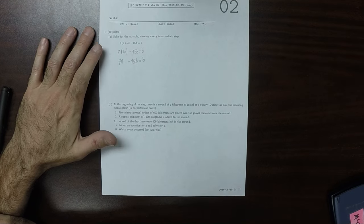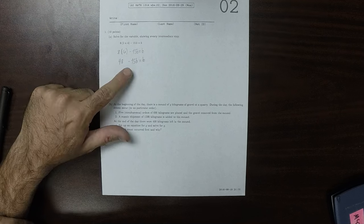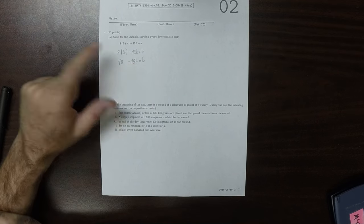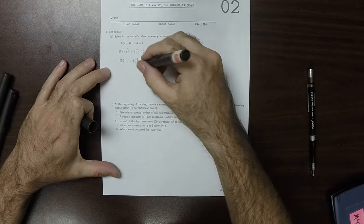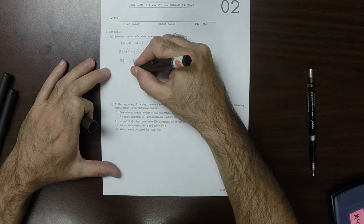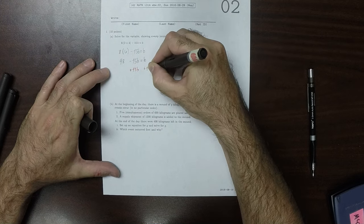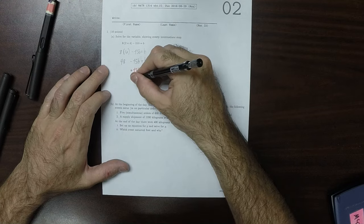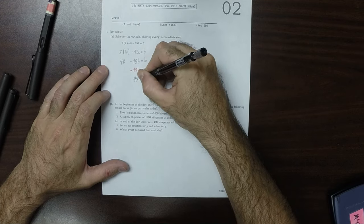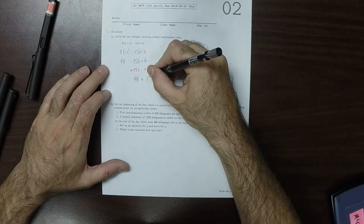We want to solve for the variable, so we need to collect the Bs together now. To collect the Bs together, we can add 15B to both sides. There's no other operations to occur besides this. Add 15B to both sides. So 48 equals 15B plus 1B is 16B.